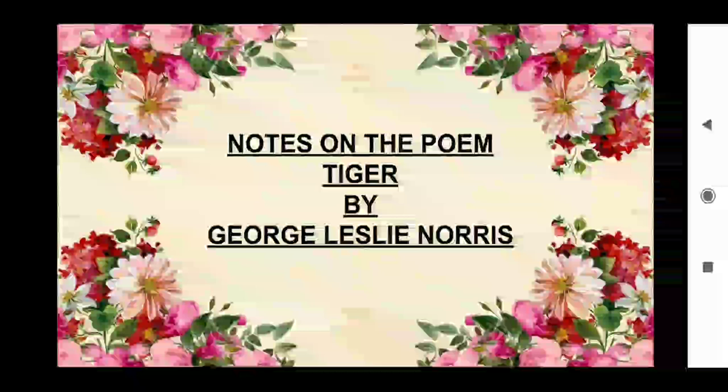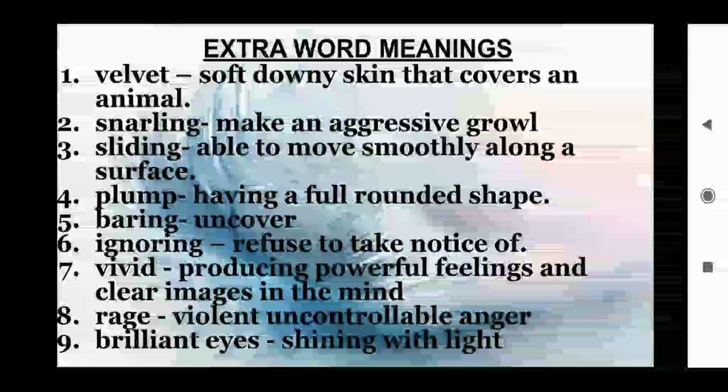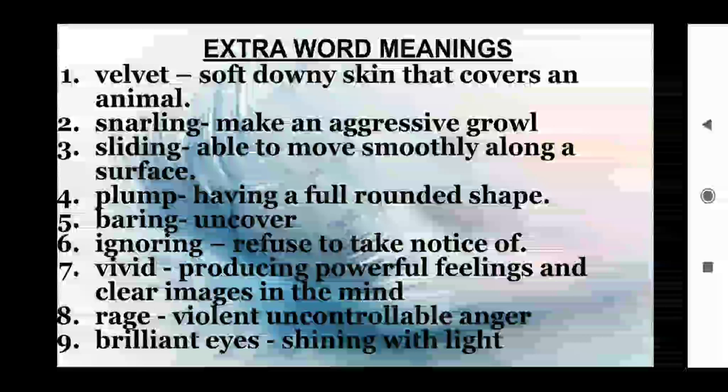Some of the extra word meanings: velvet — soft downy skin that covers an animal; snarling — make an aggressive growl; sliding — able to move smoothly along the surface; plump — having a full rounded shape; bearing — uncover; ignoring — refuse to take notice of.